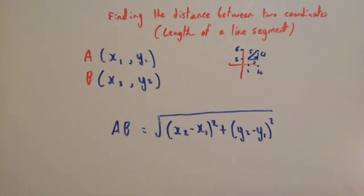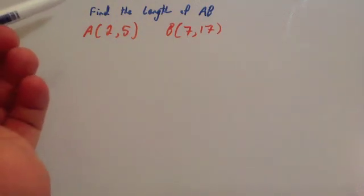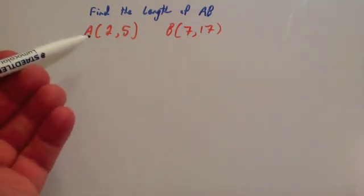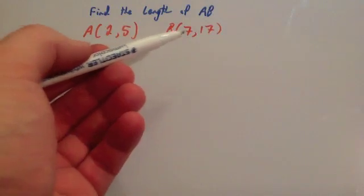Let's have a look at a couple of examples. The question says, find the length of the line AB if A equals 2, 5 and B equals 7, 17.